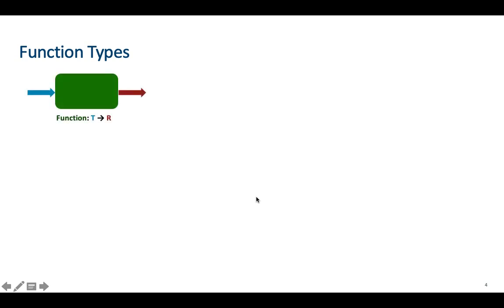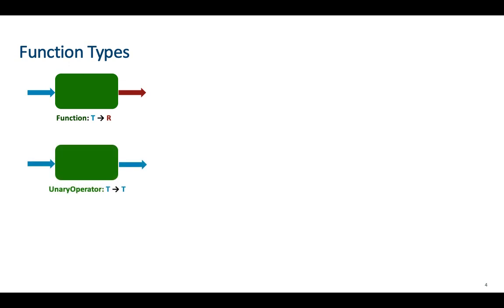For example, the first type is called a Function. The Function type in Java has one input and one output, and the type of the input and output are not necessarily the same. The next function type is called Unary Operator. Unary Operator has one input and one output, and the type of the input and output are the same.